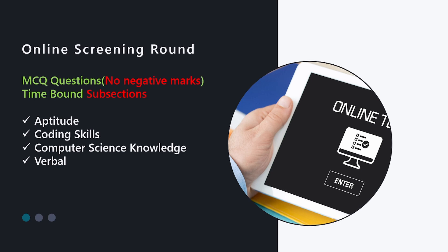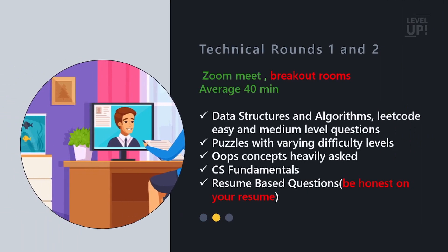After the screening round, people are shortlisted and they move on to the next round which would be the technical round. There will be two technical rounds and one HR round after that, generally conducted on a Zoom meeting where you will have multiple breakout rooms. The host will initially put you in a waiting room and when it is your turn, they will put you in a room with the interviewer. It generally takes an average of 40 minutes but can go less or beyond that depending on the interviewer.